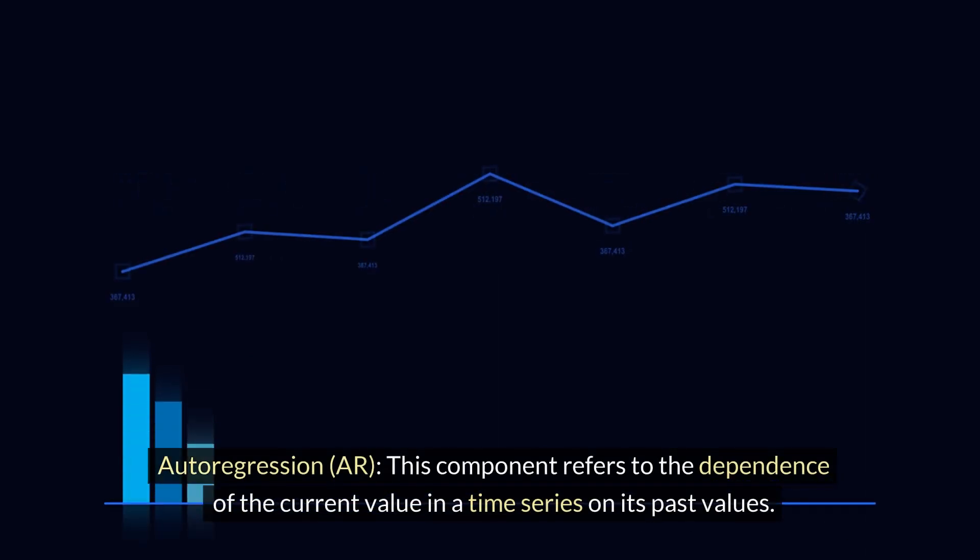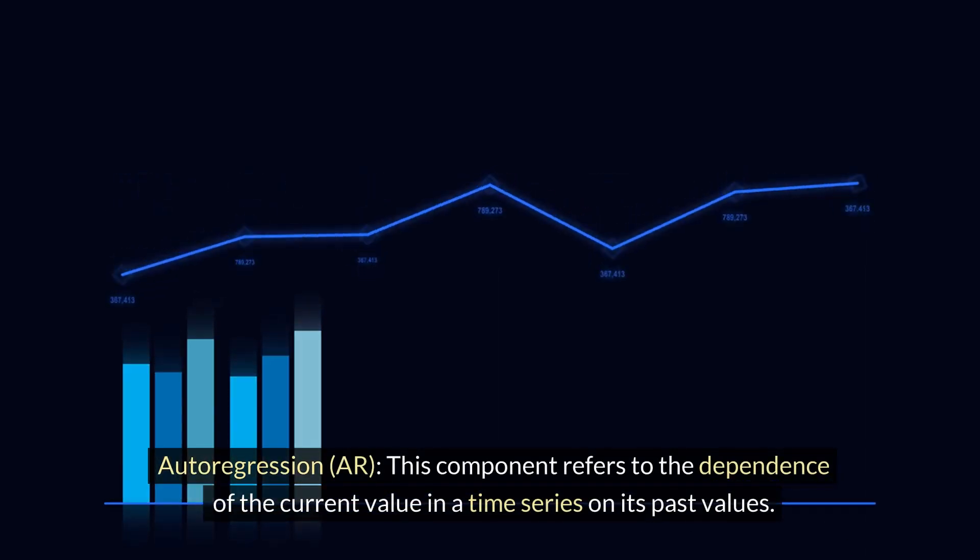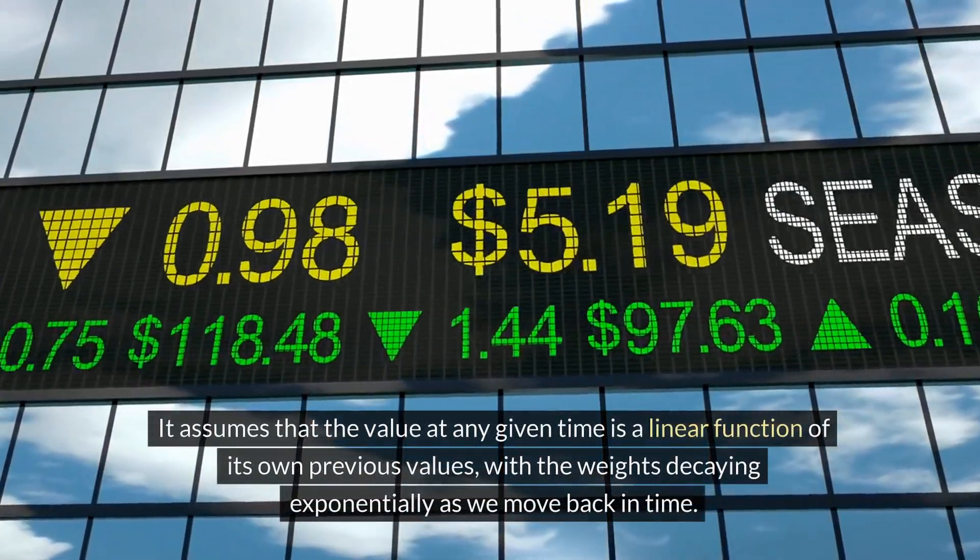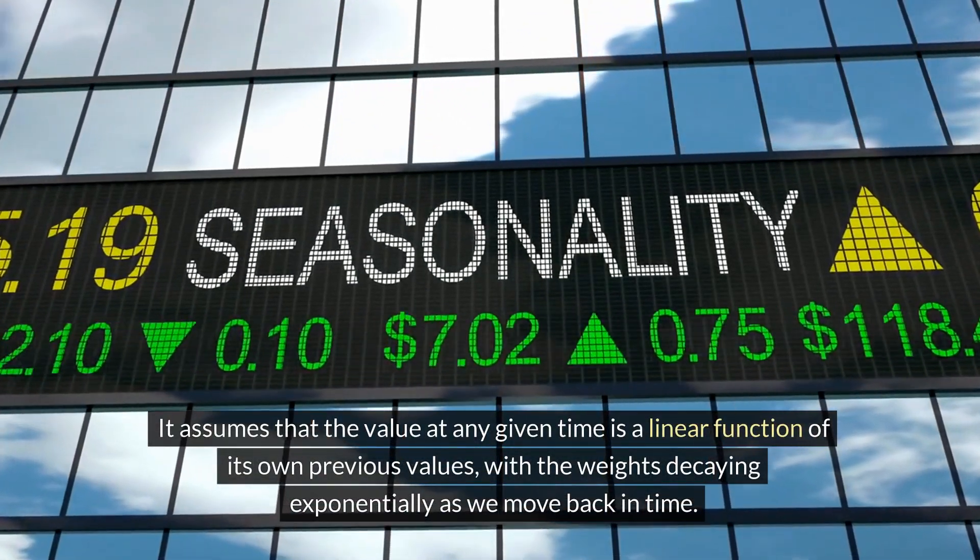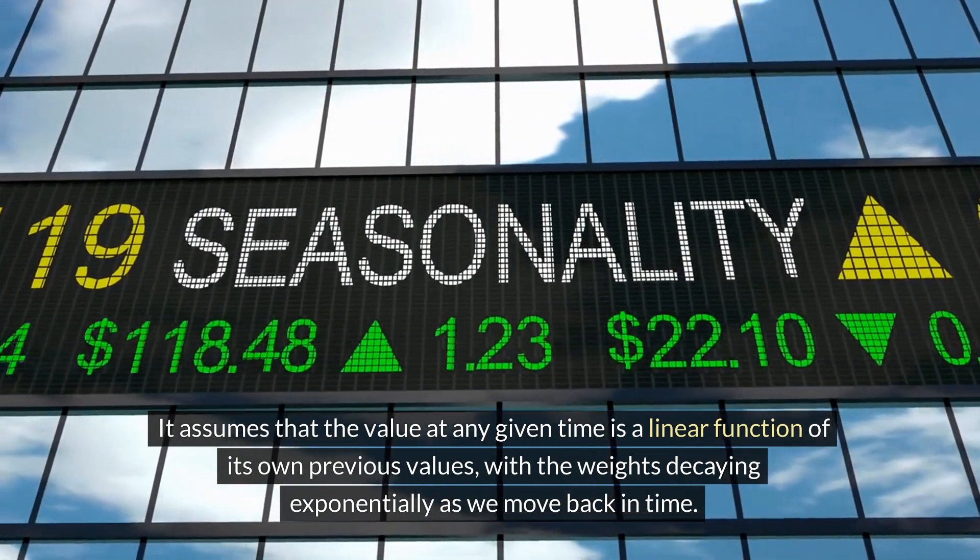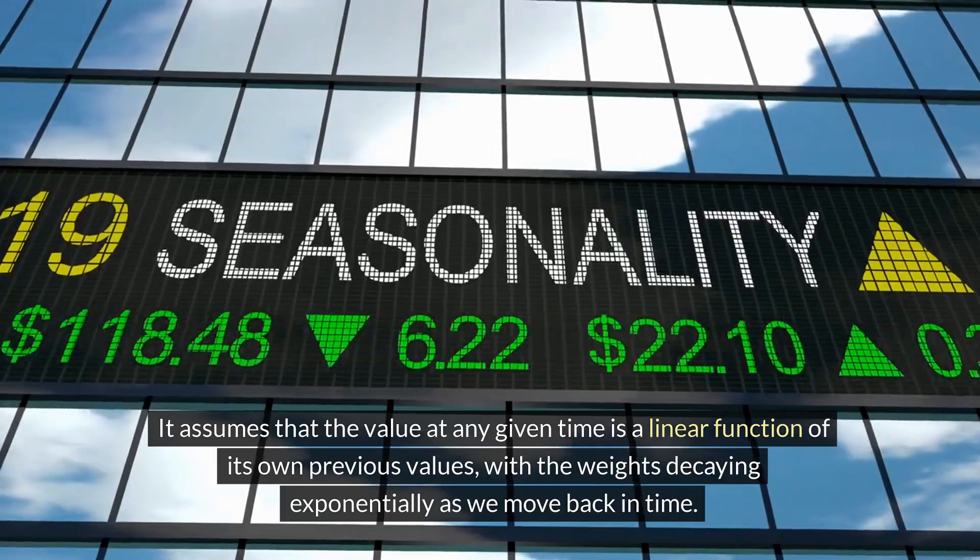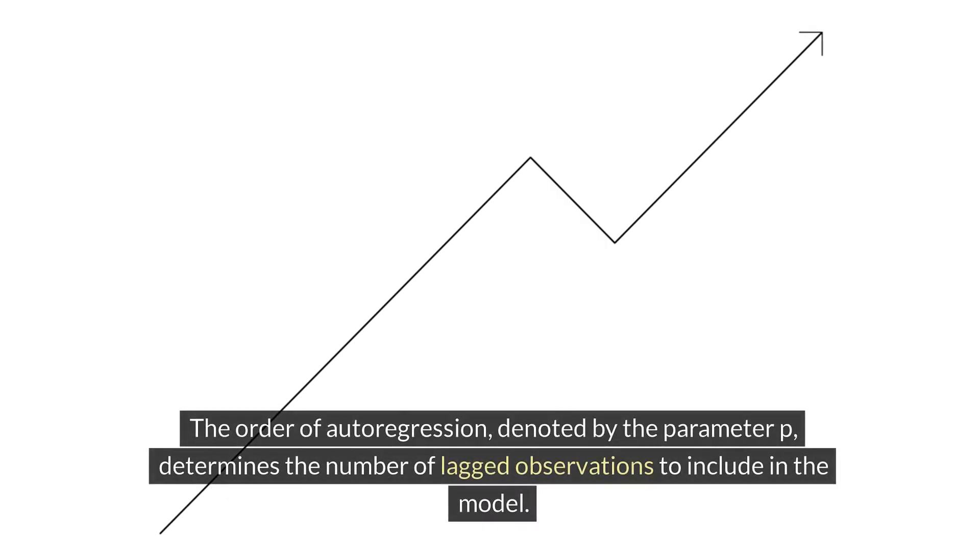Autoregression (AR): this component refers to the dependence of the current value in a time series on its past values. It assumes that the value at any given time is a linear function of its own previous values, with the weights decaying exponentially as we move back in time. The order of autoregression, denoted by the parameter P, determines the number of lagged observations to include in the model.